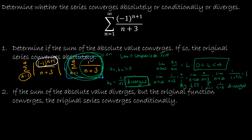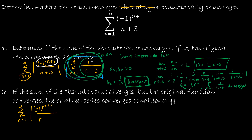What does that tell me? It does not tell me that my original series diverges. The only thing it tells me is that the series does not converge absolutely. For the second part, I now have to look at the series itself — the sum from n equals 1 to infinity of negative 1 to the n plus 1 over n plus 3 — and determine what test I can use for convergence of the series itself. I'm going to use the alternating series test.